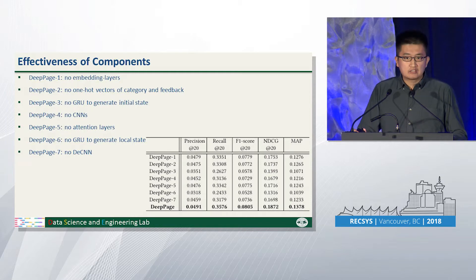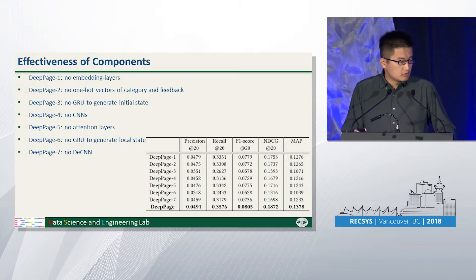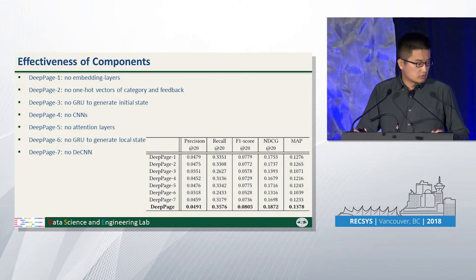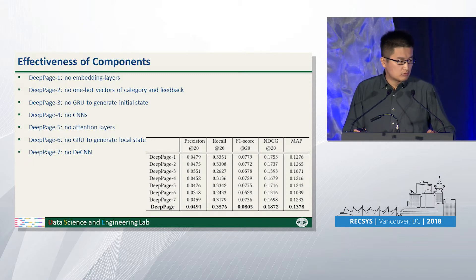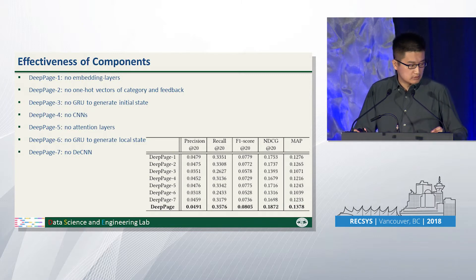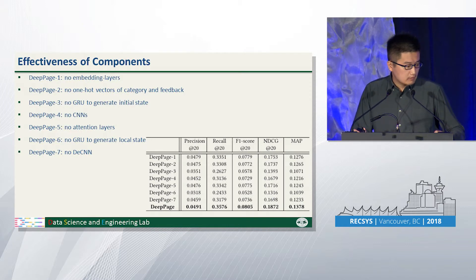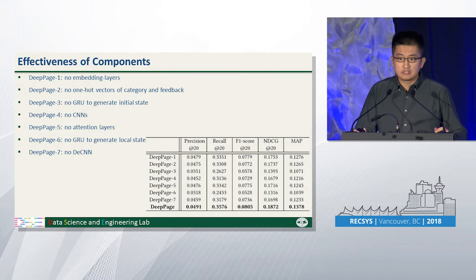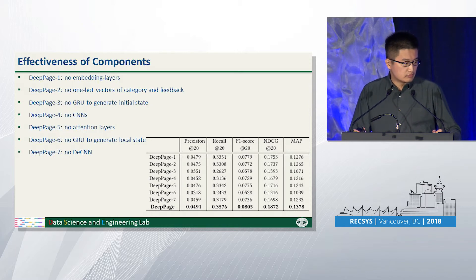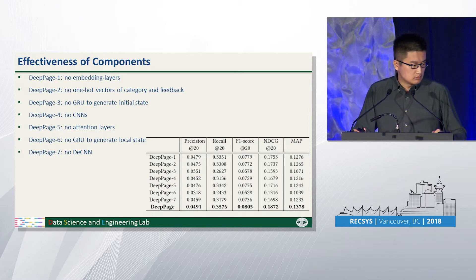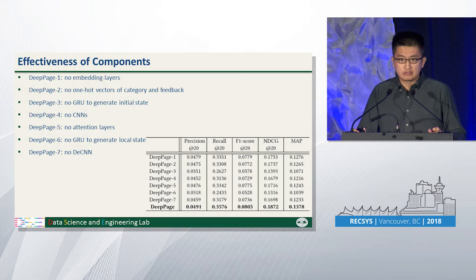To validate the effectiveness of our method, we designed several variants of our D2DDPG framework, removing one component in each variant. Our method can outperform DDPG variants that remove the CNN and the deconvolutional components. These results suggest that the item display strategy can influence users' decision-making process.